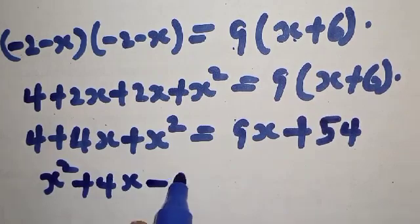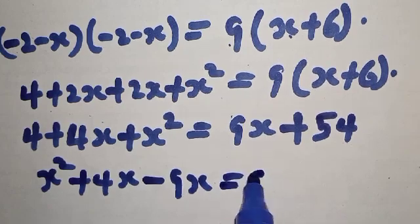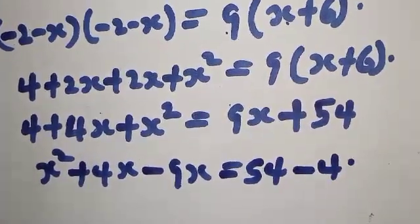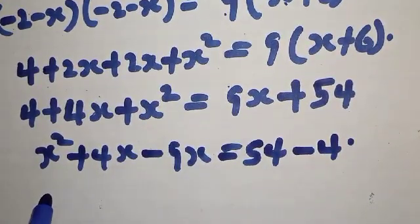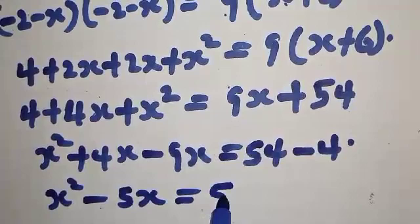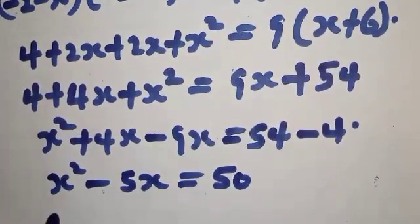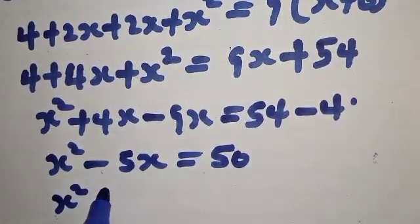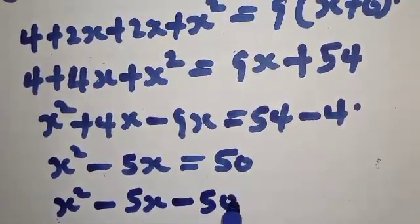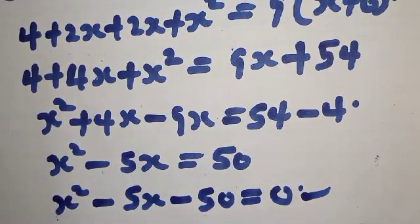Simplifying, we get x squared plus 4x plus 4 equals 9x plus 54. Bringing all terms to one side: x squared minus 5x minus 50 equals 0. This is a quadratic equation that we need to solve to find the value of x.